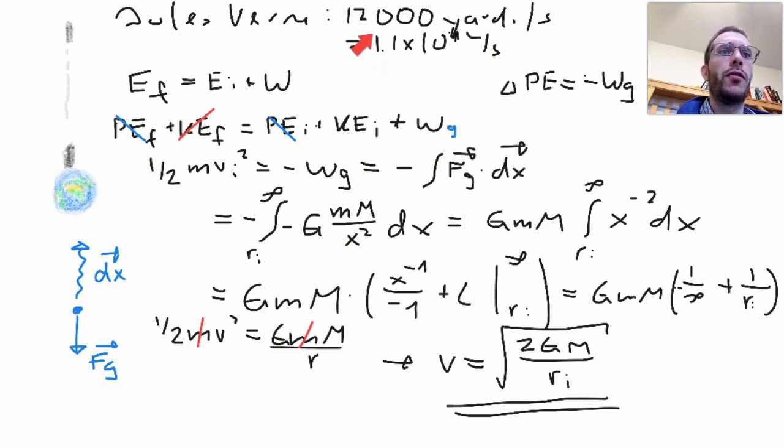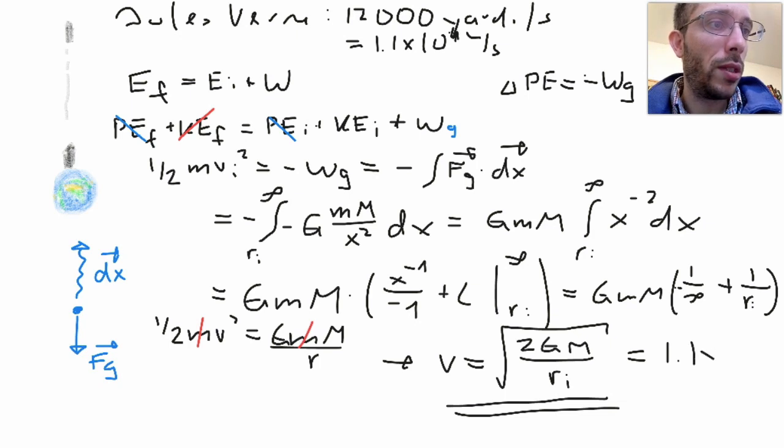Now back to Jules Verne's numbers of 12,000 yards per second, or 1.1 times 10 to the 4 meters per second. What happens if now I plug in my numbers? G as 6.67 times 10 to minus 11 Newton square meters per kilogram square, the mass of the Earth as 5.97 times 10 to the 24 kilograms, and the radius of the Earth, assuming we are leaving just from sea level, then we would have a radius of 6.37 times 10 to the 6 meters. Now what I will get is the following: